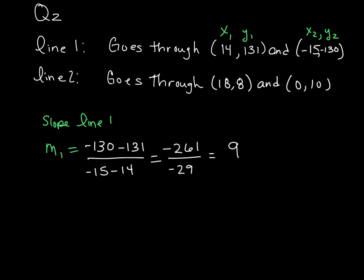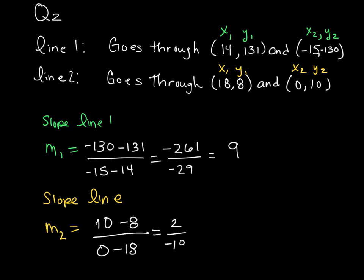Let's go ahead and look at line 2 now. So slope for line 2, which I'm going to call m2. Same idea. I'm going to label that x1, y1, x2, and y2. I go ahead and subtract. That gives me 10 minus 8, all divided by 0 minus 18, which gives me 2 over negative 18. I reduce that. Both of those numbers are divisible by 2. So that leaves me with negative 1 over 9.